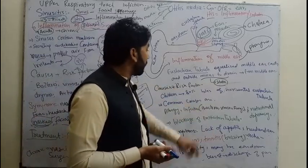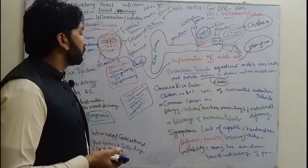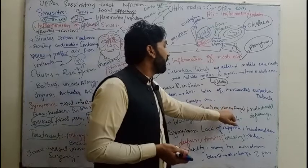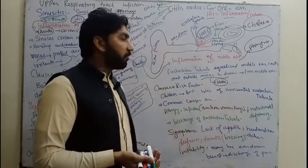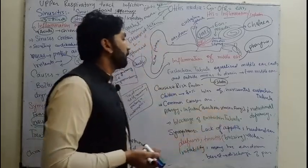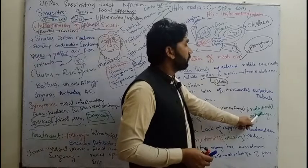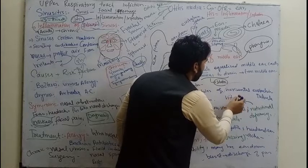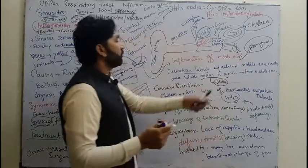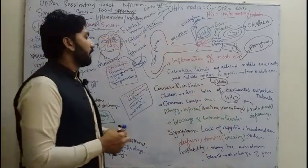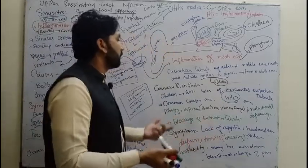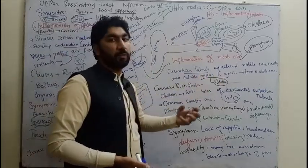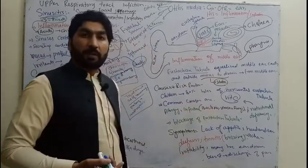The most common causes of otitis media are allergy, infection — which may be bacterial, viral, or fungal — and importantly, nutritional deficiency, specifically Vitamin C deficiency. Another important cause is blockage of the Eustachian tube: when fluid is not drained naturally from the tube, it can lead to otitis media.